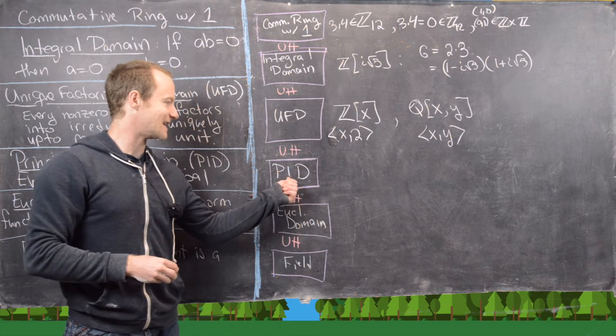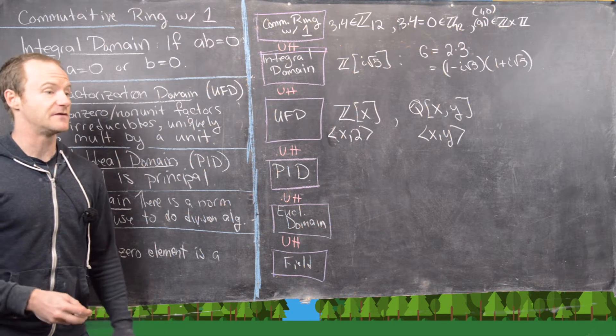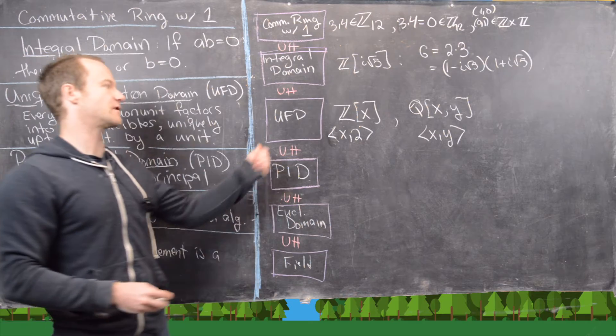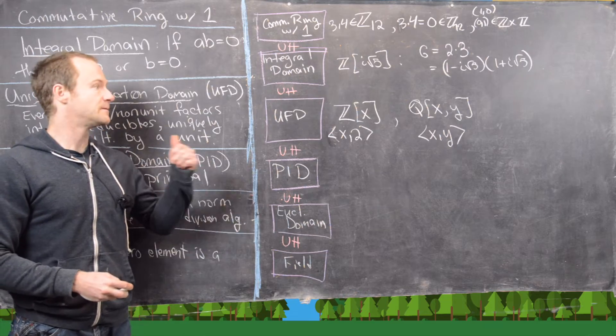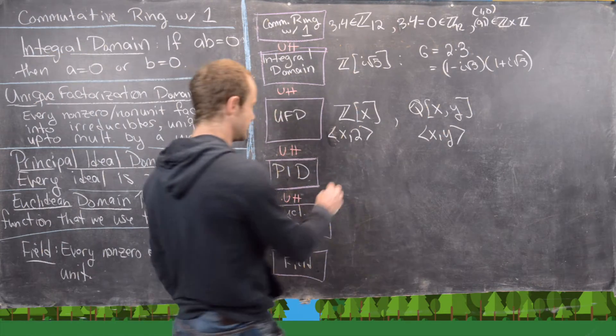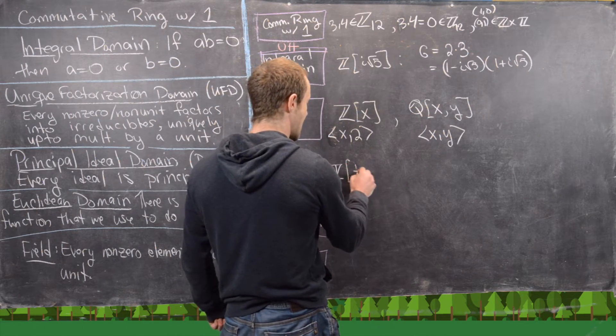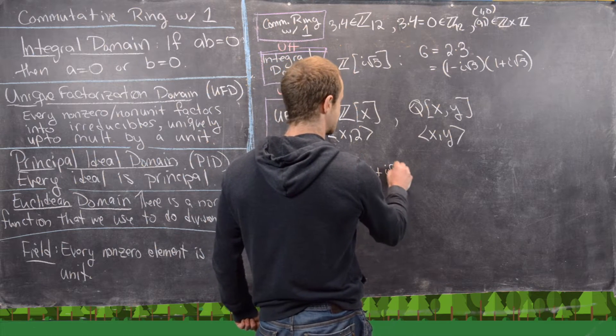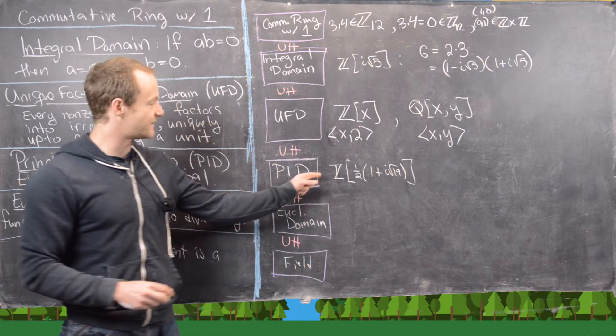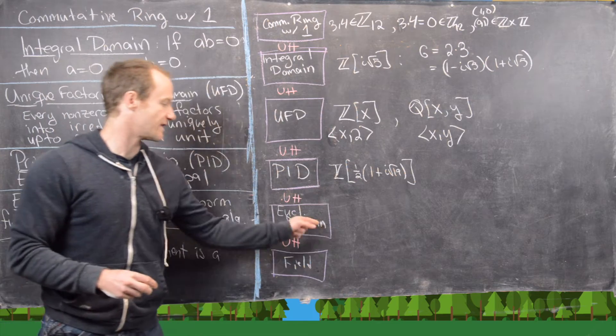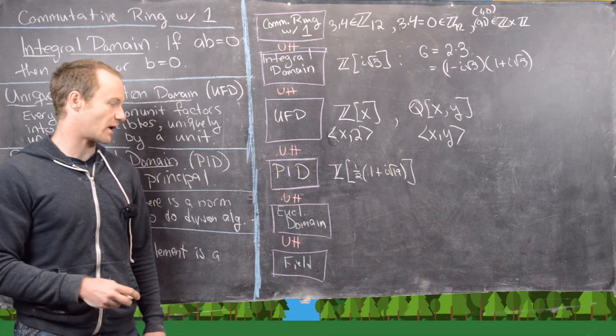So next, maybe we want something that is a PID but not a Euclidean domain. And this is actually much harder. And we have another video on the channel doing that. And you'll see that it's much more involved than these. In fact, all I can really do here is write down the example and not talk through it because it's so complicated. So it's the integers, but now we adjoin this complex number. And that would be 1/2 (1 plus i times the square root of 19). It's in the same spirit as this kind of thing up here. But in fact, you do get a PID in this case but you will not get a Euclidean domain.